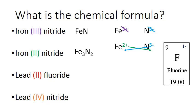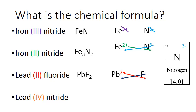For lead(2) fluoride, fluorine has a charge of 1-, and lead (Pb) has a charge of 2+ because the name tells us so. Crossing those down gives us PbF2. For lead(4) nitride, nitrogen is 3- and lead is 4+. Crossing those down — the 4 goes to N and the 3 goes to Pb — and we end up with Pb3N4. That's how you figure out chemical formulas from the name.